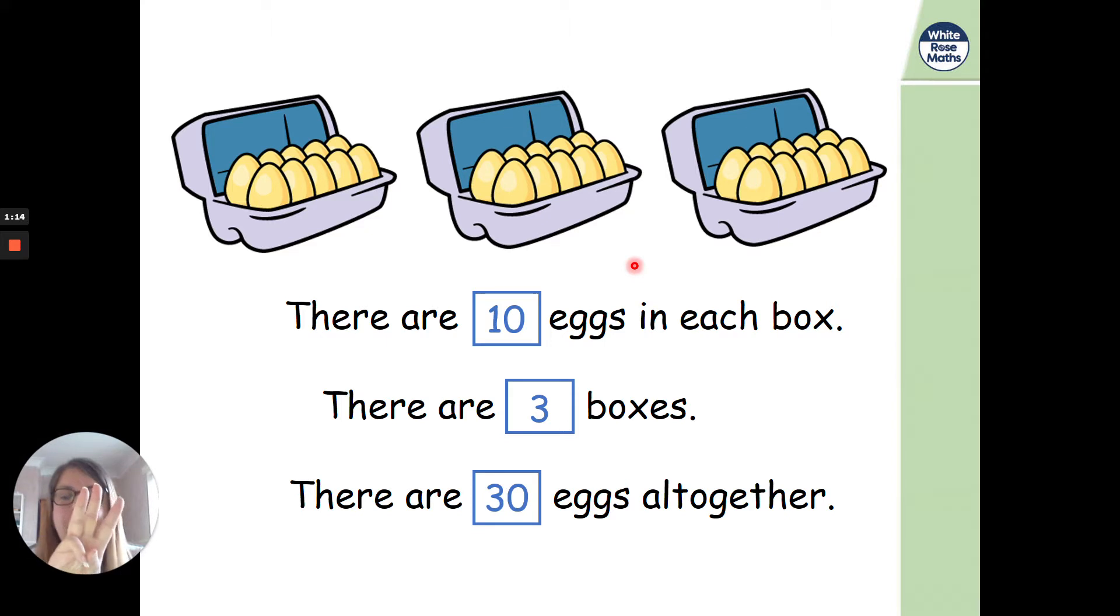Now, do I need to go 1, 2, 3, 4 and start counting like that? Or is there an easier way I can do it? Of course there's an easier way, isn't there? I hope you're saying it. I hope you're going 10, 20, 30. Because we know 3 lots of 10 is 30.